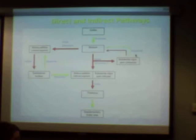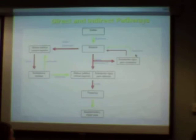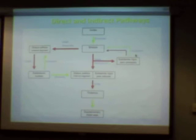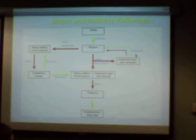A positive symptom is something you exhibit that you wouldn't normally have. A negative symptom is something you can't do which you normally could do. A positive symptom of Parkinson's disease - resting tremor. You wouldn't normally do that. That's a result of the battle between the direct and indirect pathways. A negative symptom of Parkinson's disease - bradykinesia, which is slowness of movement. Normally you move at normal speed; now they're moving slower. That's a negative symptom.